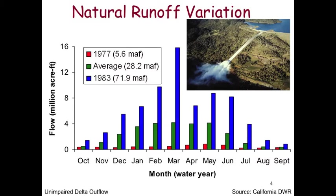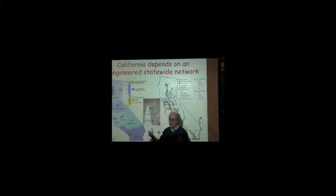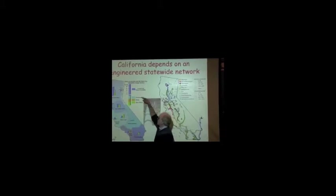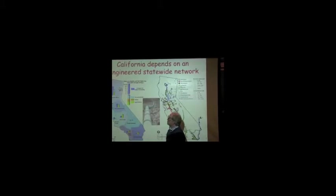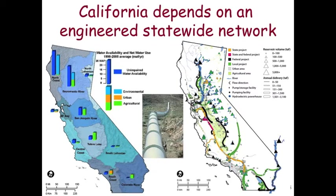This picture is Oroville Spillway working. This map here shows essentially some of that mismatch. The blue is the water availability, the average annual water availability in different regions in California. And then the colorful stuff here is the relative environmental, urban, and agricultural water demand. You'll notice we have more water available in the north. When we get down to Tulare Basin, they use more water than they have. How do you do that? You got to bring it in from somewhere else.